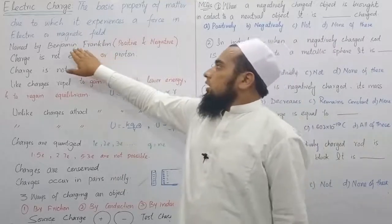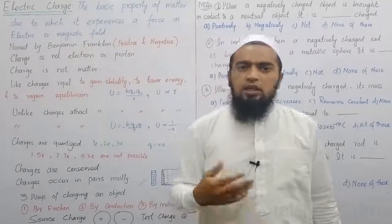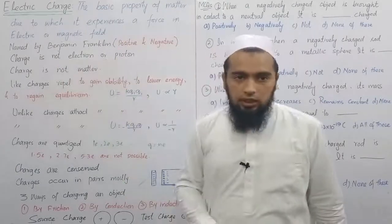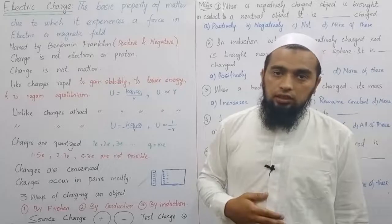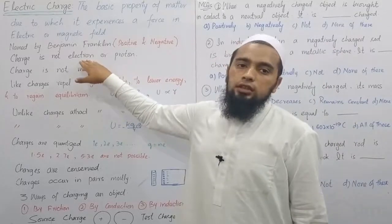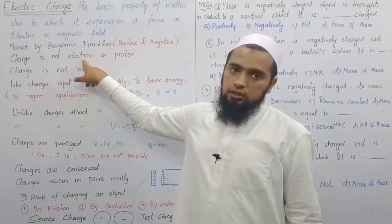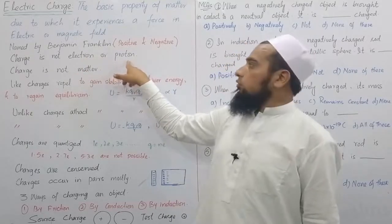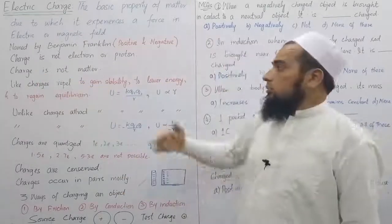The names Positive and Negative Charges were first given by Benjamin Franklin. Charge is not the electron or proton itself. The electron is not the charge; rather, charge is a property of the electron, named Negative. Similarly, charge is a property of the proton, named Positive. As discussed, charge is not matter — charge is a property of matter.